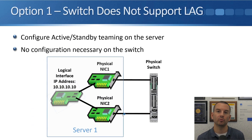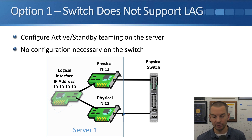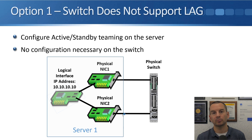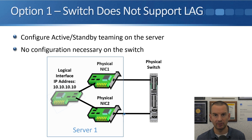Let's look at the different options for NIC teaming. Option one: if the switch does not support link aggregation and cannot configure port channels, we use active standby. We configure active standby teaming on the server and specify it in the software. On the switch, we just configure the switch ports as normal access ports — no additional configuration needed. If the server's active link fails, the switch will automatically learn to use the other link to reach that server.